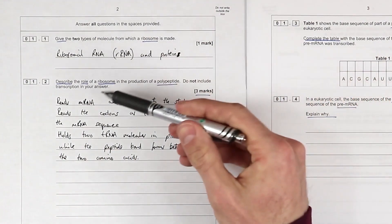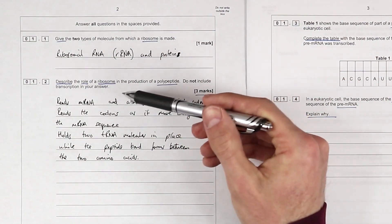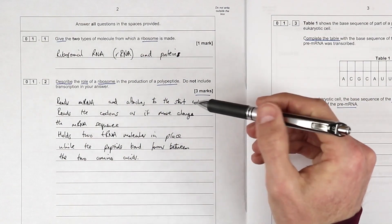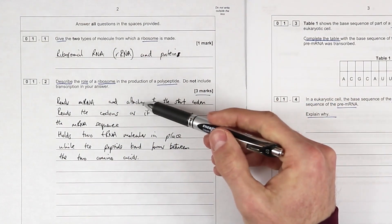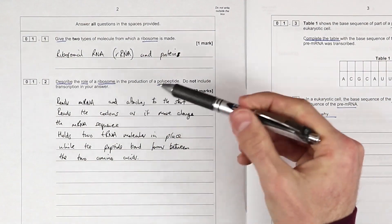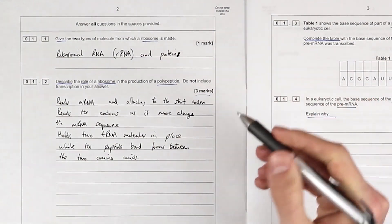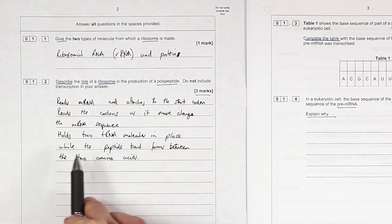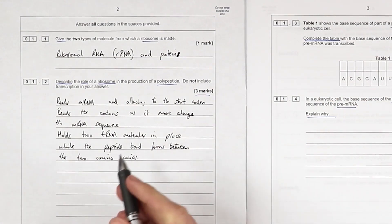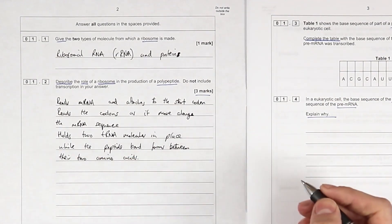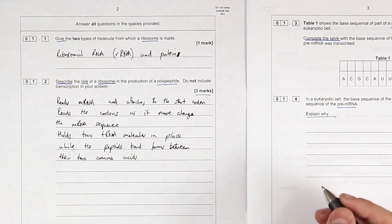Reads the messenger RNA and attaches to the start codon. You might want to say binds to. I can't imagine they're going to mark us down for a different word, attach versus bind. Reads the codons as it moves along the mRNA sequence. Holds two transfer RNA molecules in place while the peptide bonds form between their two amino acids. Maybe it detaches at the stop codon.